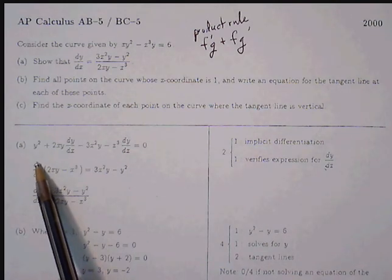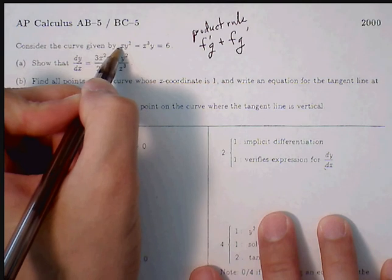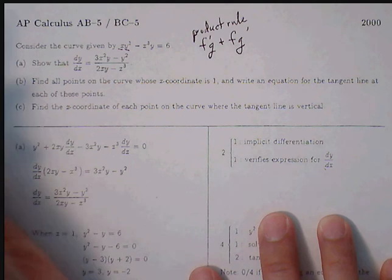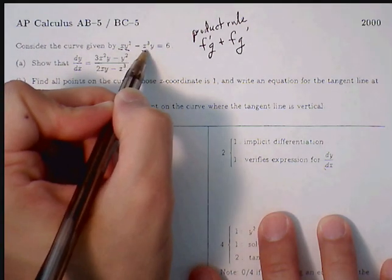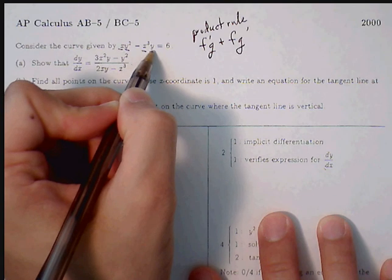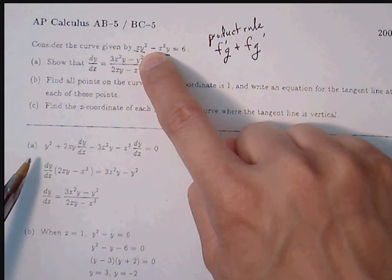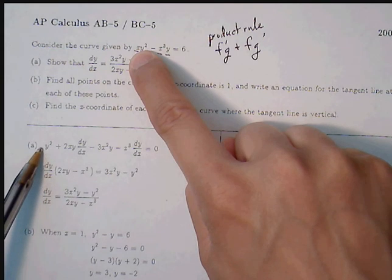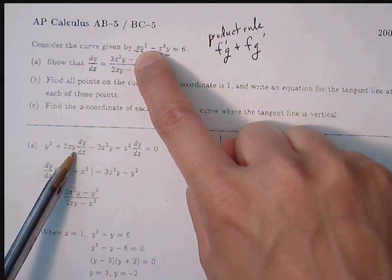For part A, we apply the derivative rules to both terms. For the first term, xy², I'll treat x as f and y² as g. The derivative of x is 1, so f′ times g gives us 1 times y², which is just y². Plus f times g′: we keep x, then find the derivative of y².